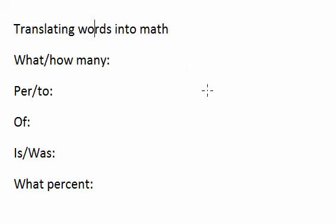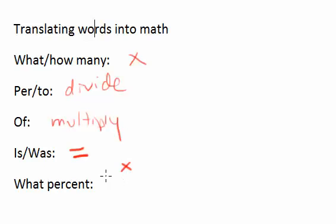Anytime you see the word 'what' in a problem or 'how many', that's our unknown, so that's x. The words 'per' or 'to' mean divide. The word 'of' means multiply. If you see 'is' or 'was', that's the same as an equal sign. If you see the phrase 'what percent', we already know 'what' is x, 'per' is divide, and 'cent' is 100.